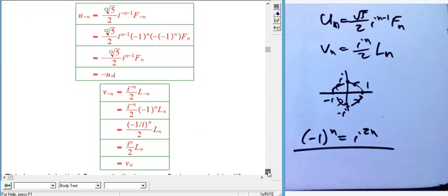So now v sub minus n. We're just going to plug it into the definition here, minus n in both places. And then again, this one has a little bit simpler symmetry. This has the minus 1 to the n times L_n. So let's collect this. We've got a minus 1 to the n and an i to the minus n. Well, that's a 1 over i to the n. So this all is minus 1 over i to the n.